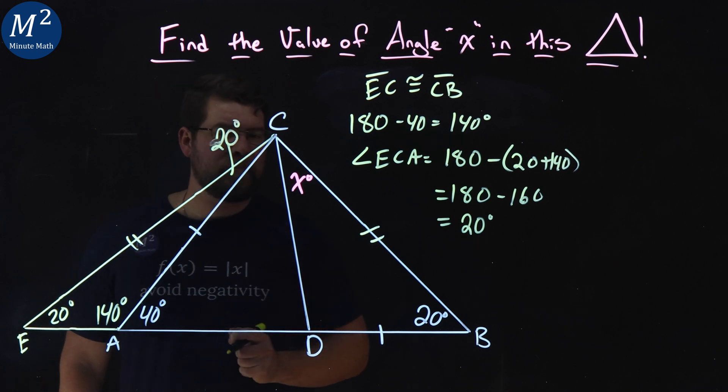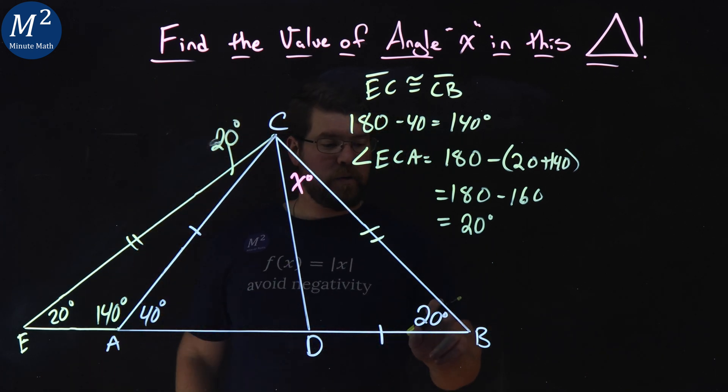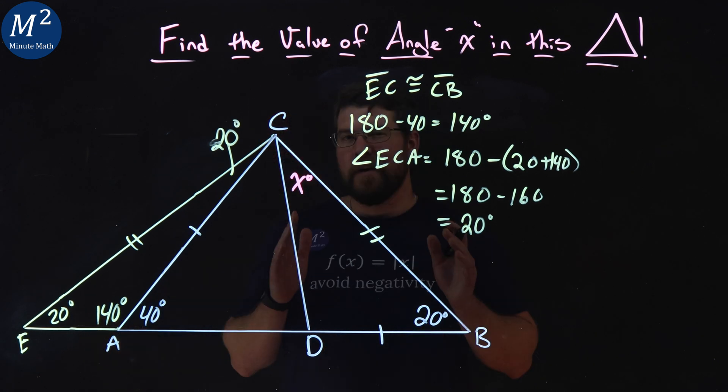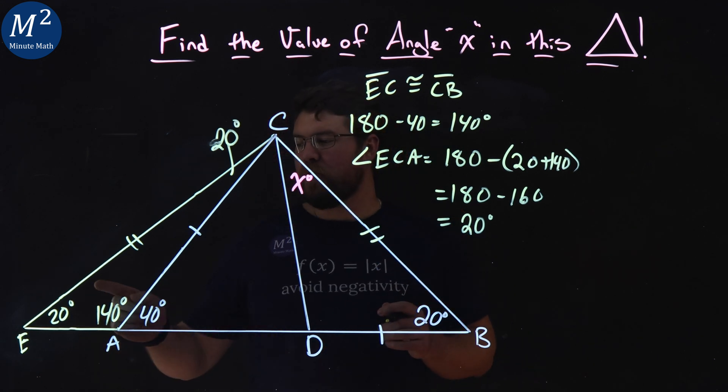All right. So we have 20 degrees here, 20 degrees here, 20 degrees there. Now let's look at this. We have triangle ECA.